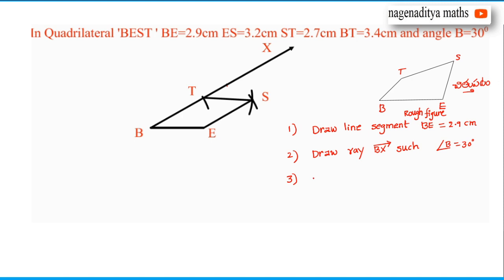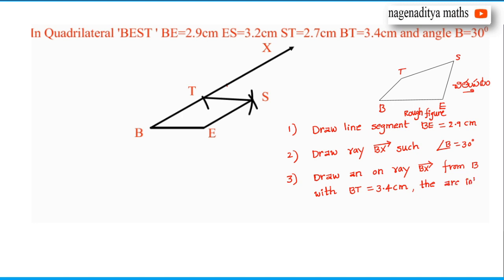Third step: Draw an arc on ray BX from point B with radius BT equal to 3.4 centimeters. The arc intersects BX at point T.